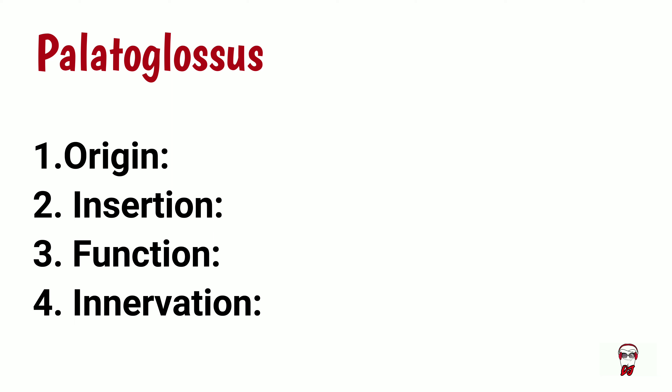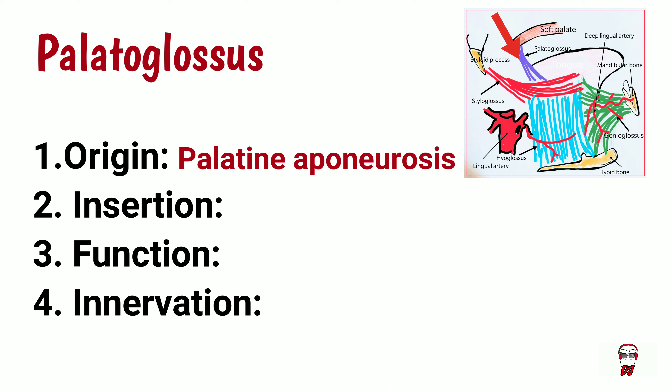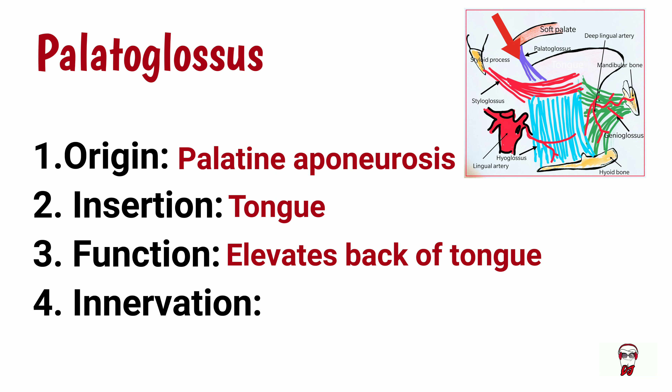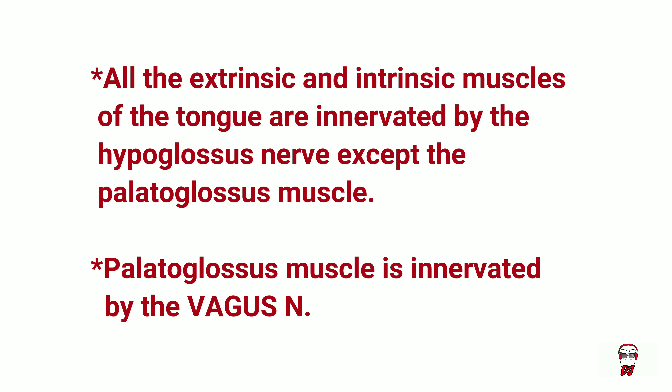The styloglossus is also innervated by cranial nerve 12. Finally, the palatoglossus muscle originates from the palatine aponeurosis of the soft palate and inserts into the side of the tongue. Its action is to elevate the back part of the tongue and it is innervated by the vagus nerve. It is the only muscle of the tongue not innervated by the hypoglossal nerve — this can be used as an MCQ.